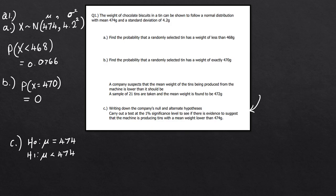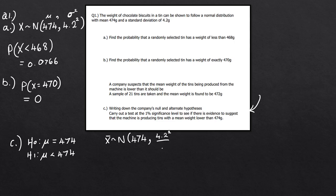We assume H0 is true and write down the distribution for the sample mean. X-bar is normally distributed with mean 474. For the variance we need the standard error: that's 4.2² divided by the sample size of 21, so the variance is 4.2²/21. Remember when you input this into your calculator you need to take the square root of that full expression to get the standard deviation.